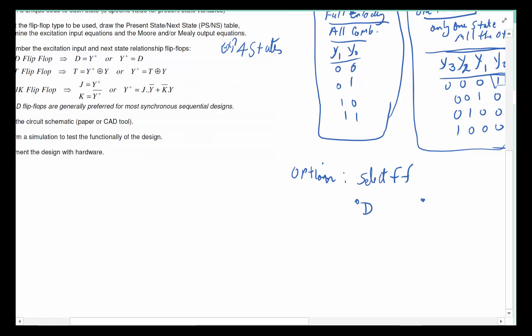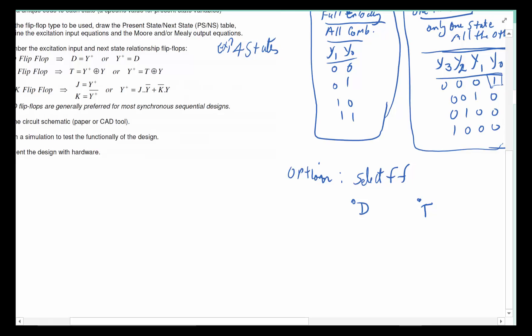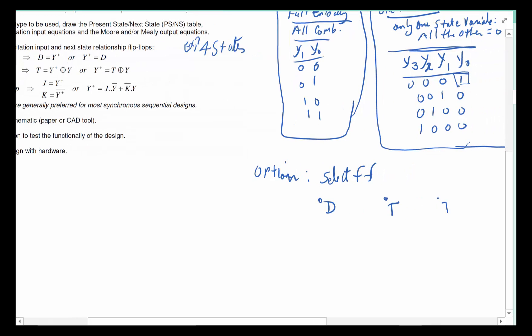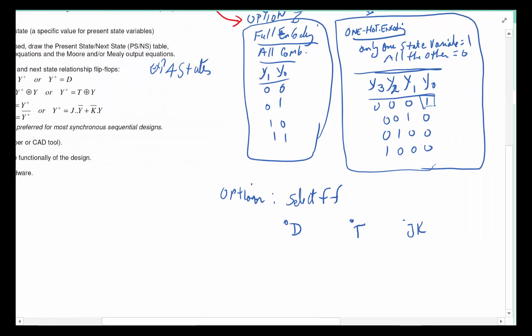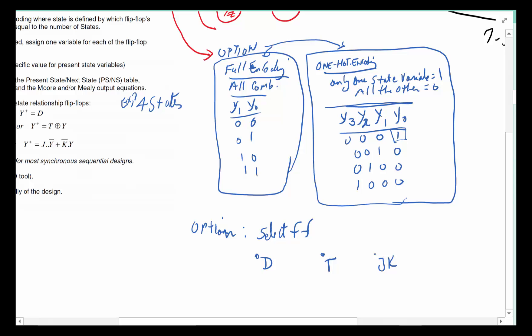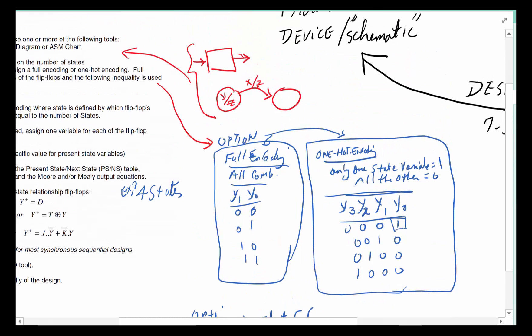Here you have three options: you can select a D, you can select a T flip-flop, or you can select a JK flip-flop. Just to be sure, if you solve a problem, you have literally two options: full encoding or one-hot encoding.